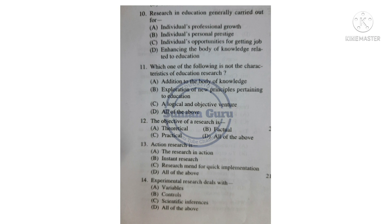Question 12: The objective of research is — Option A: Theoretical. Option B: Factual. Option C: Practical. Option D: All of the above. Answer is Option D: All of the above. Telugu explanation: Parisodhana yokka lakshana — Option A: Saithdhantika. Option B: Vastavam. Option C: Asheranatmaka. Option D: Paivanni.